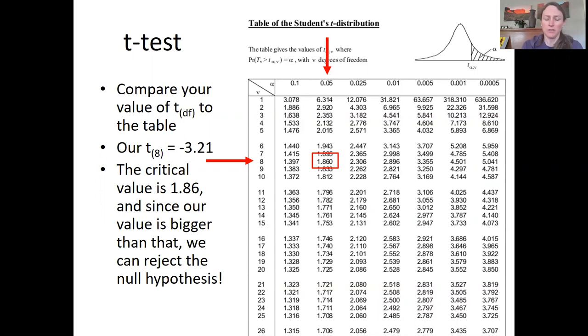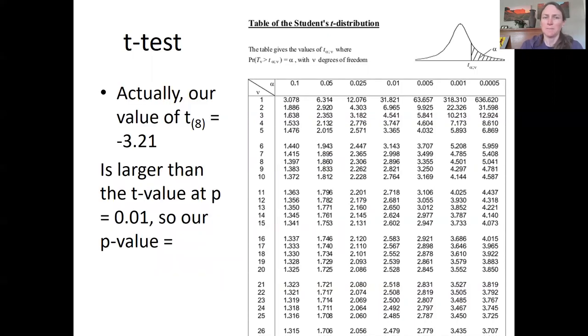So this is what we call the critical value of t. And since our value is bigger than that, we can reject the null hypothesis. Now, technically, our value of t is bigger. And so we could go all the way over to here, because our value of 3.2 is somewhere in between 2.896 and 3.35. That actually tells us that our p value associated with the t value of 3.21 is less than 0.01. So we would report p less than 0.01.